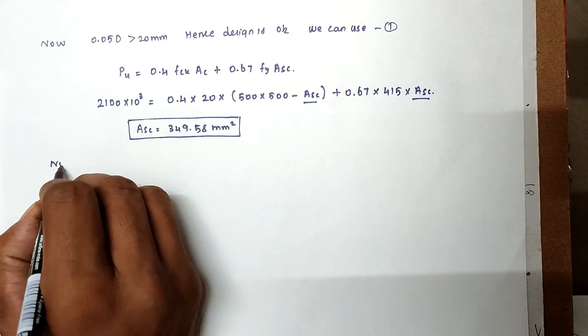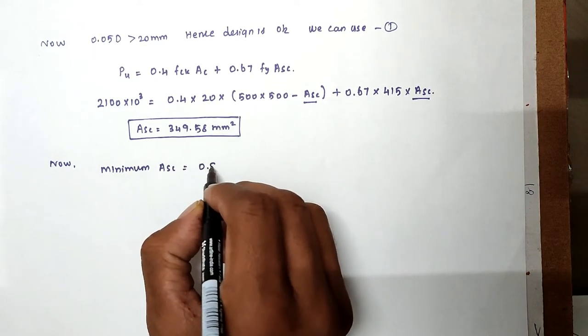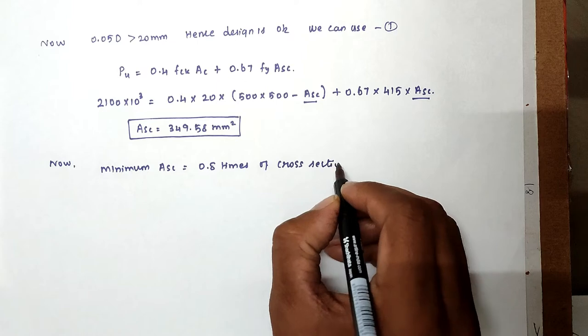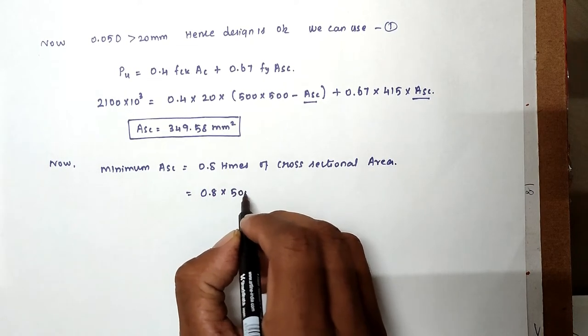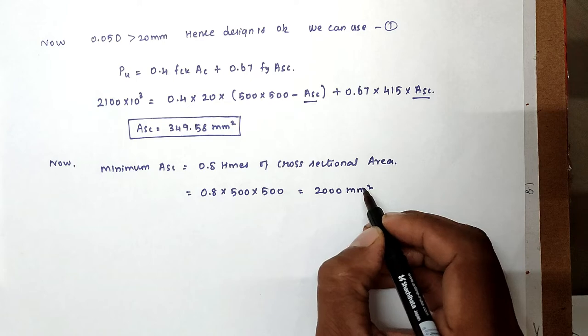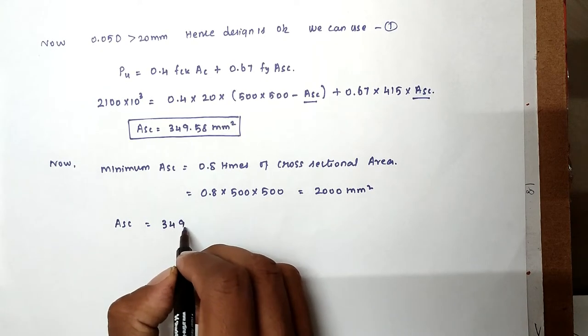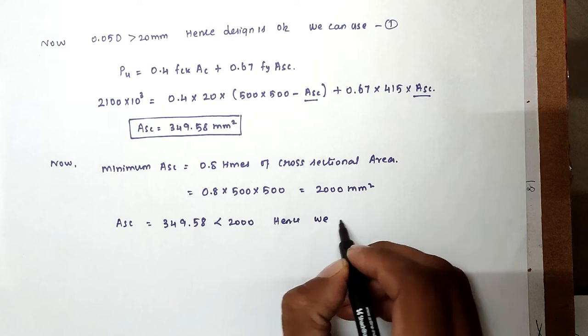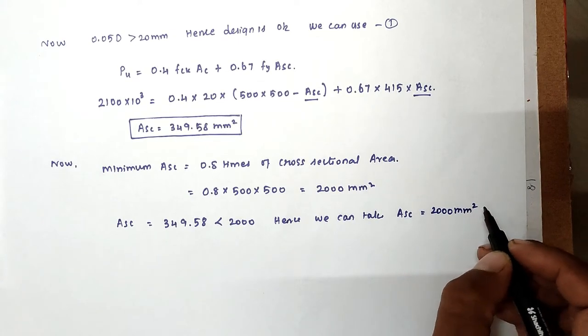So this is the ASC value. So now minimum ASC equal to 0.8% of cross section area. So now 0.8 into 500 into 500. So the value will be 2000 mm square. So the ASC we got is 3492.58 which is greater than 2000. Hence we can take ASC as 2000 mm square.